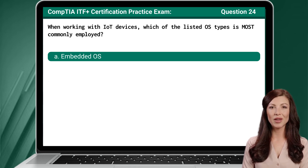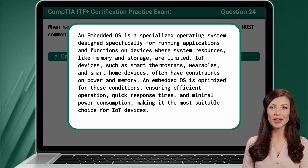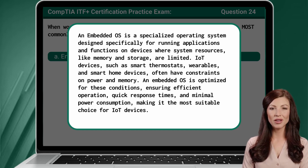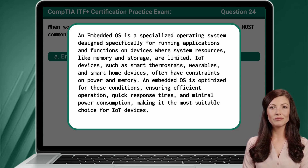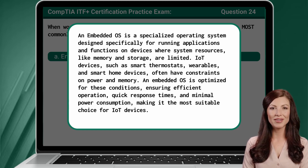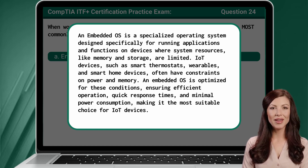An embedded OS is a specialized operating system designed specifically for running applications and functions on devices where system resources, like memory and storage, are limited. IoT devices, such as smart thermostats, wearables, and smart home devices, often have constraints on power and memory. An embedded OS is optimized for these conditions, ensuring efficient operation, quick response times, and minimal power consumption, making it the most suitable choice for IoT devices.